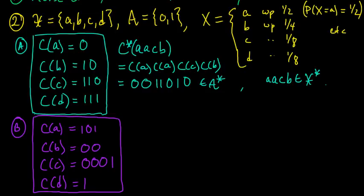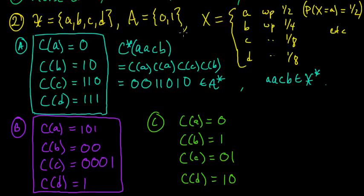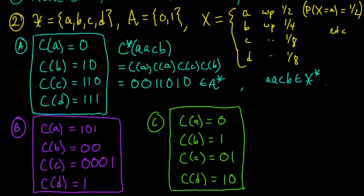And one more — Code C: c(a) = 0, c(b) = 1, c(c) = 01, c(d) = 100. It's a valid function from source symbols to sequences of zeros and ones, so it satisfies the definition of a symbol code.